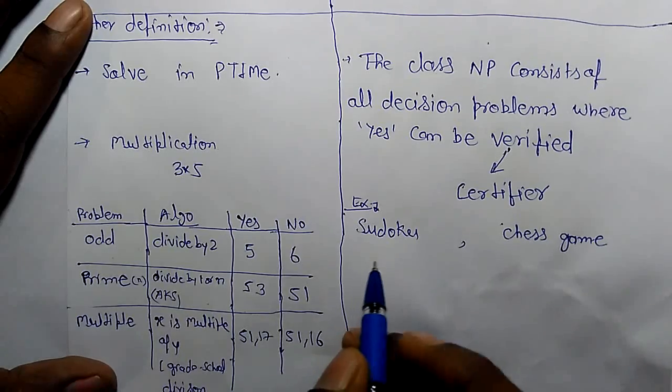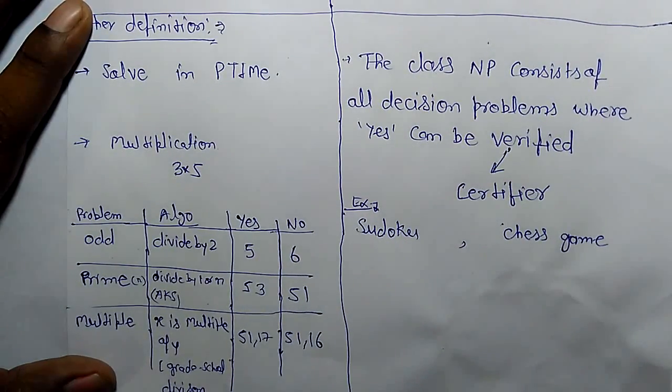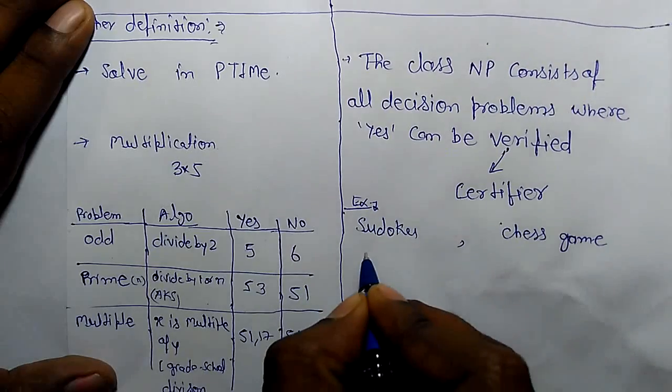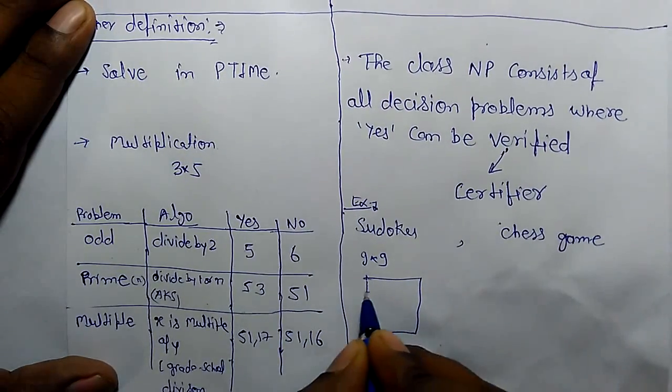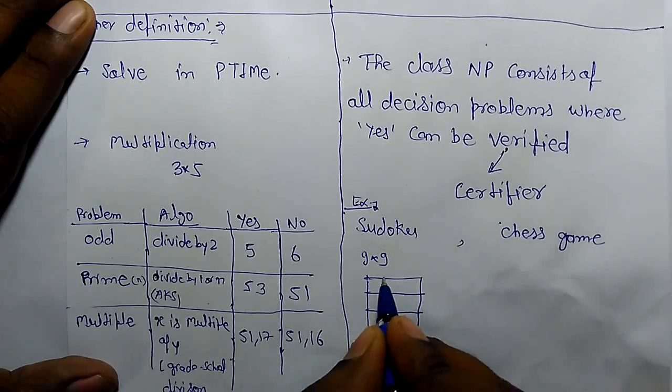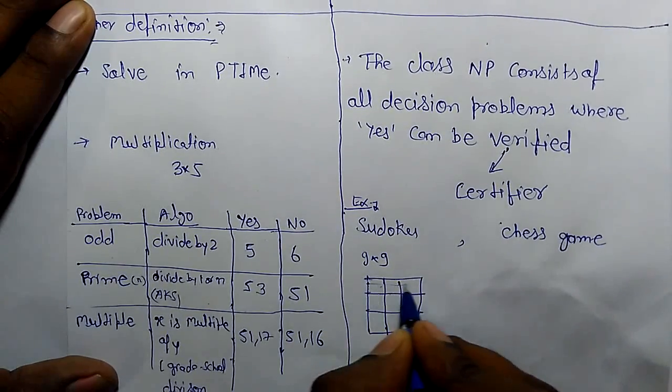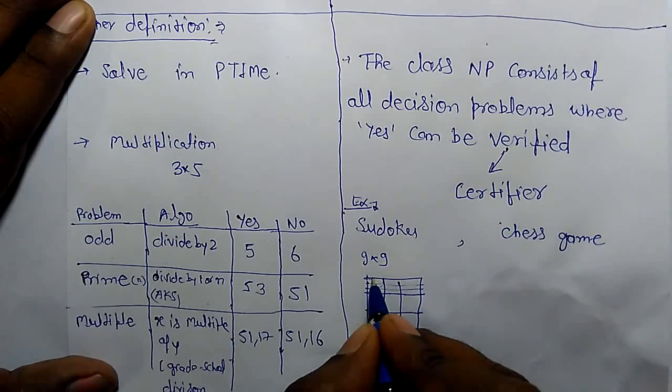An example of an NP class problem is SUDOKU - you have played 9 by 9 SUDOKU problem. It is also divided in 3 parts.